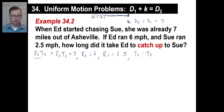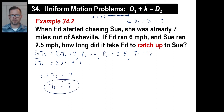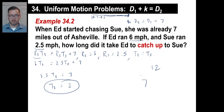Plugging in: 6 times t sub E equals 2.5 times t sub E plus 7. Moving terms: 3.5 times t sub E equals 7, so t sub E equals 2 hours. Let's check — Ed runs 6 miles per hour for 2 hours, that's 12 miles. Sue is already 7 miles ahead and runs 2.5 miles per hour for 2 hours — 2.5 times 2 is 5, so 7 plus 5 is 12. Same distance. Correct!